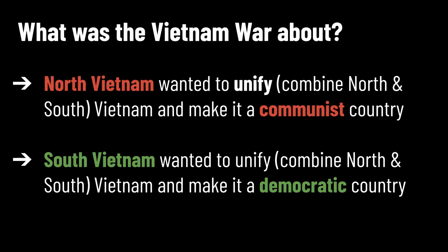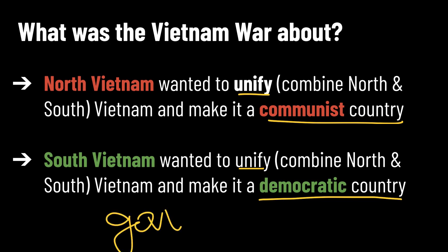The Vietnam War is all about power — who is going to control the country of Vietnam. At this point in history, Vietnam is two countries: North and South Vietnam. The North wanted to combine or unify Vietnam under one communist country. South Vietnam also wanted to unify, but they wanted to have the power and make Vietnam a democratic country. So this is all about government and power: who has the power to form and control the government of Vietnam?